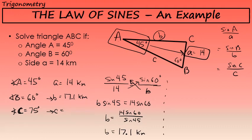I'll do a similar process to find the length of side c. Earlier, I found that angle C was 75 degrees. Using the law of sines, and again starting with angle A, 45, and side a, 14, but this time instead of setting it equal to sine of B over side b, I'm going to set it equal to the sine of angle C, 75, over the length of side c, which is the unknown.